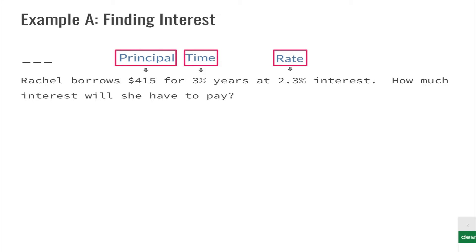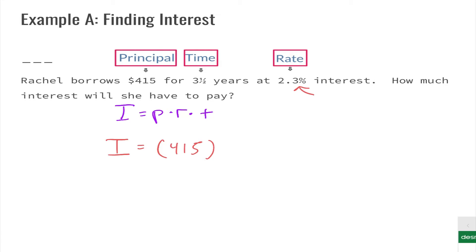Now let's take a look at our formula. Writing our formula: I equals P times R times T. We're going to substitute in the variables that we have. We don't know I, so we leave that as I. Our principal is four hundred and fifteen dollars. We take our rate of two point three percent and move the decimal two places to the left, giving us 0.023. Our time is three and a half, written as 3.5. Then we just multiply all these together.